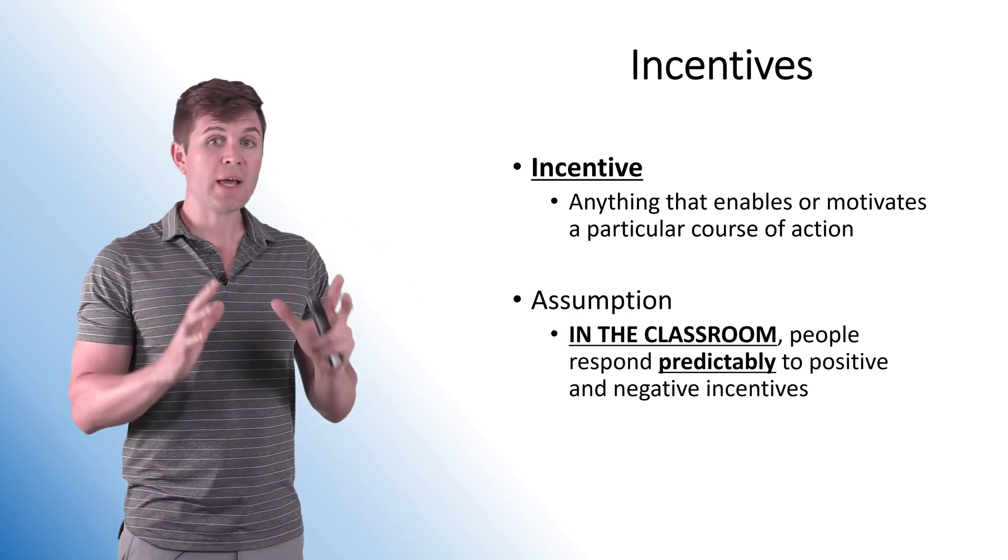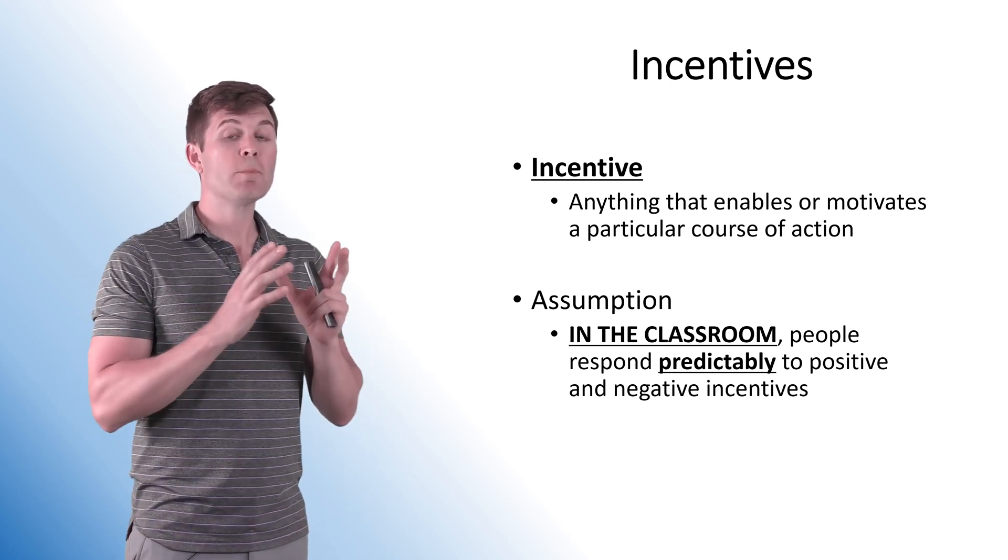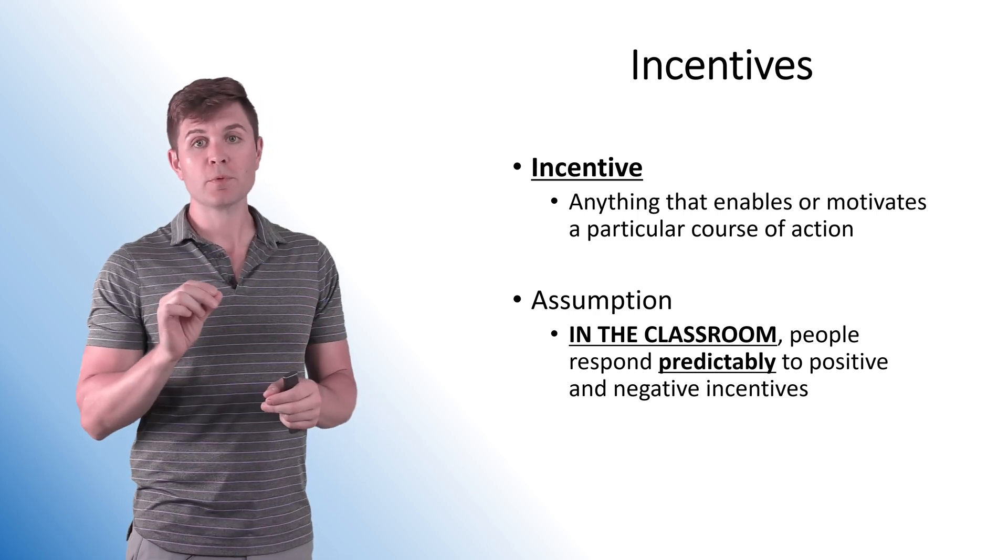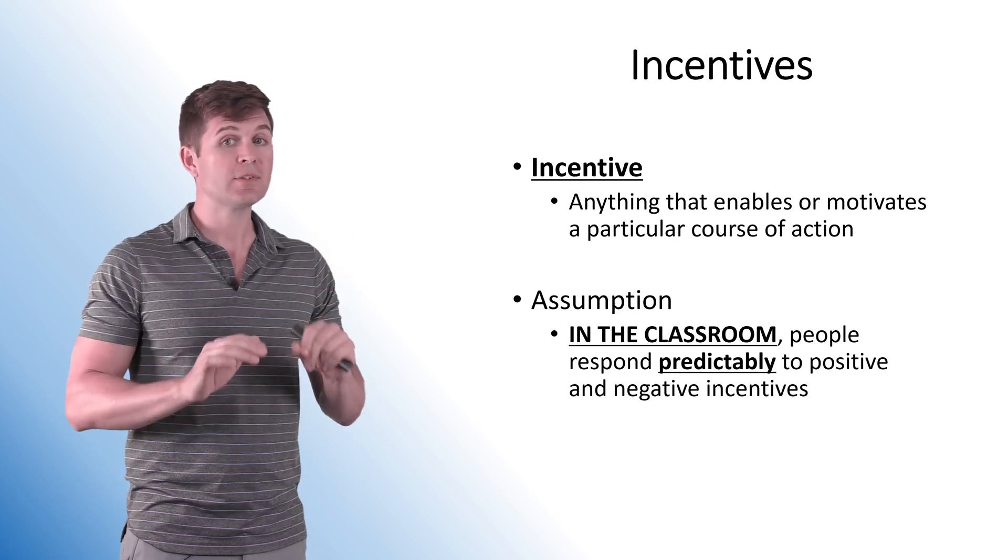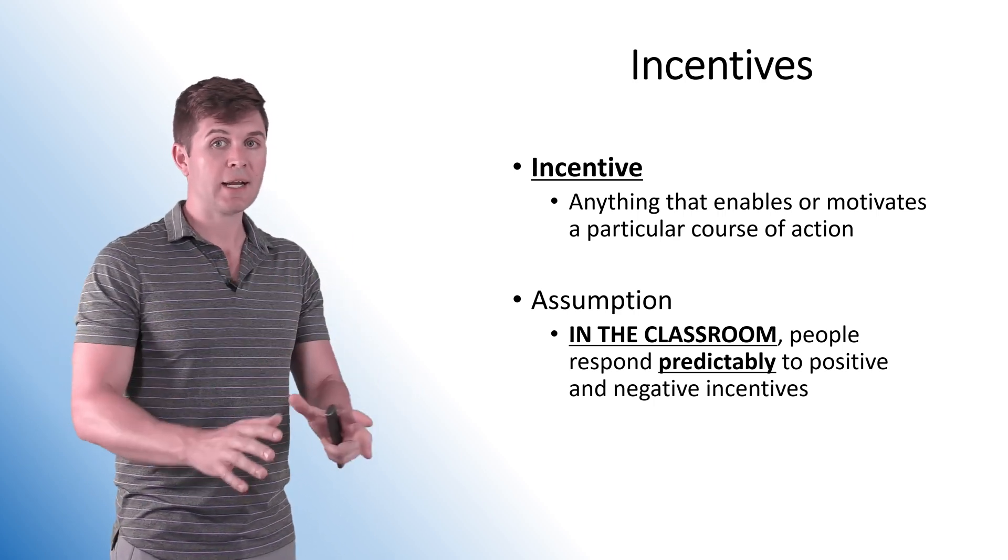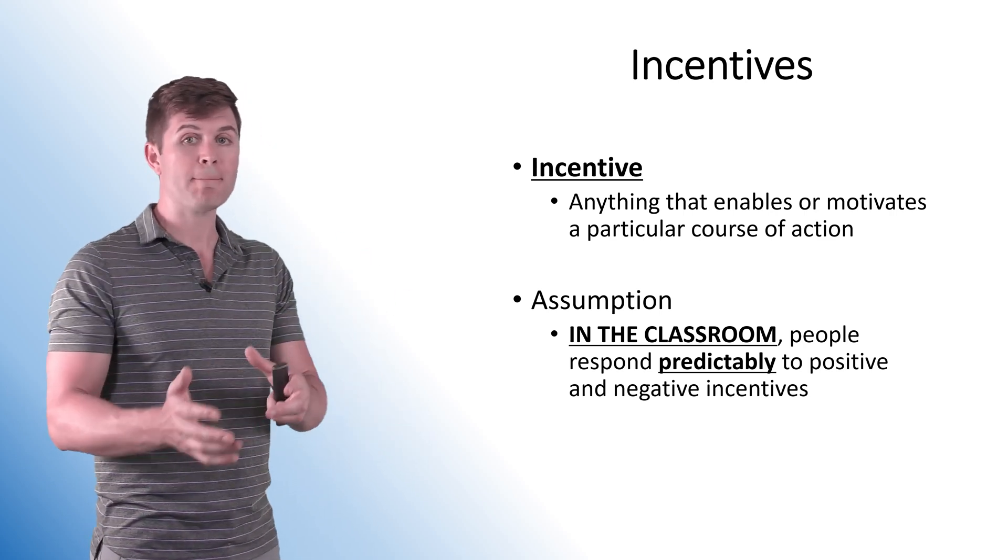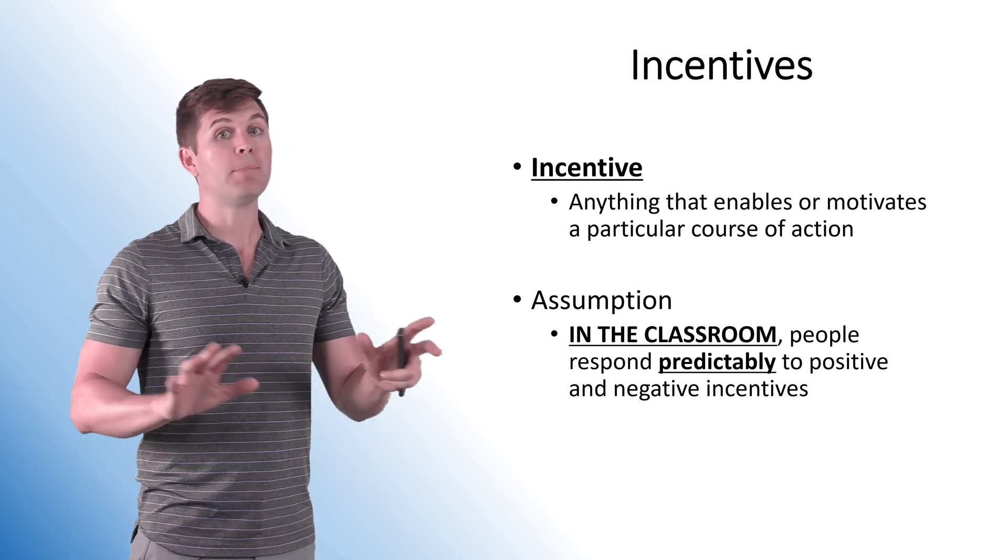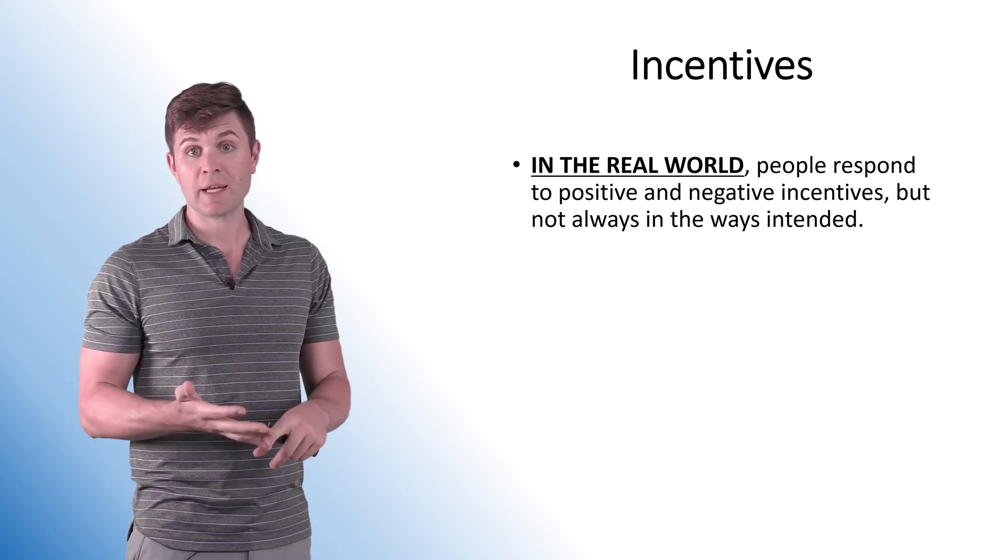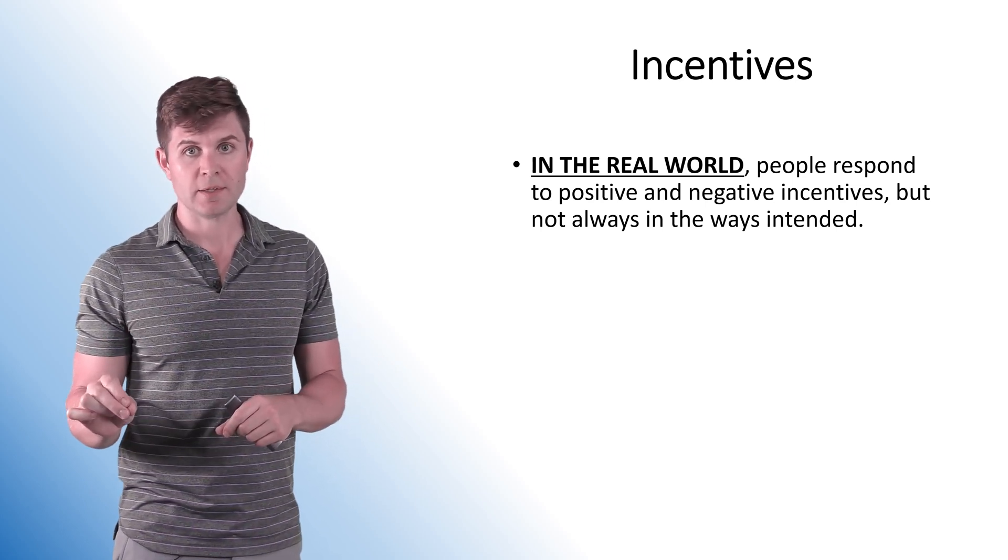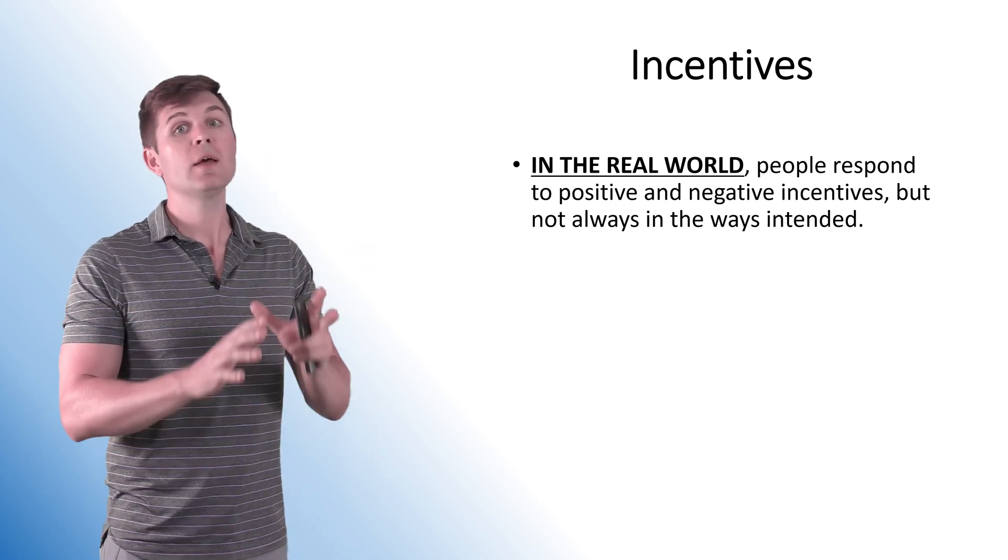All right, so the assumption that we make—and this is another big assumption in economics, just like everybody's an optimizing individual—we're making the assumption that people will respond predictably to positive and negative incentives. This is limited to the classroom. In AP econ, we assume things like when price goes up, we buy less. When price goes down, we buy more. People respond to those incentives predictably. But, however, in the real world, people respond to positive and negative incentives, but not always in the way intended.